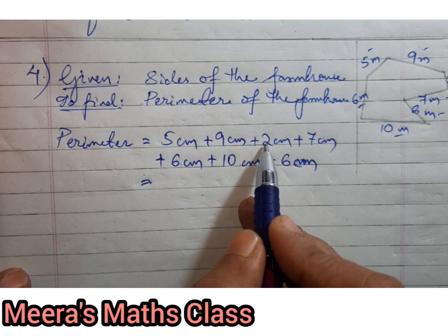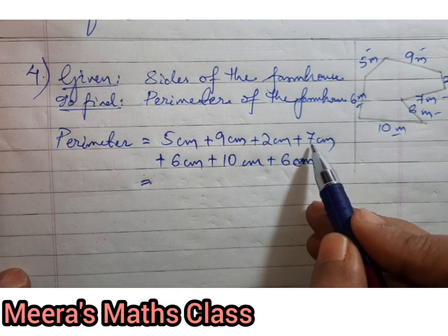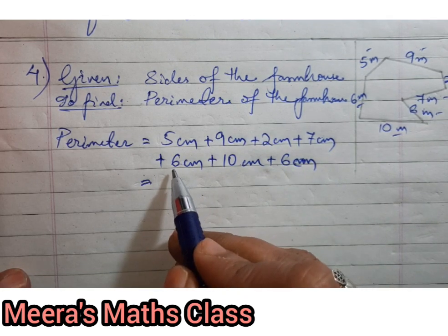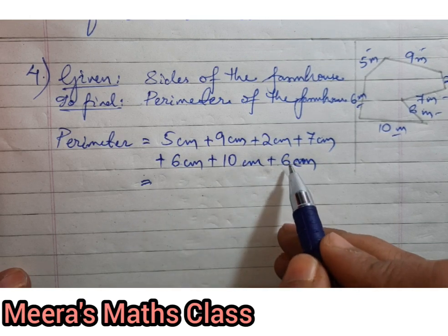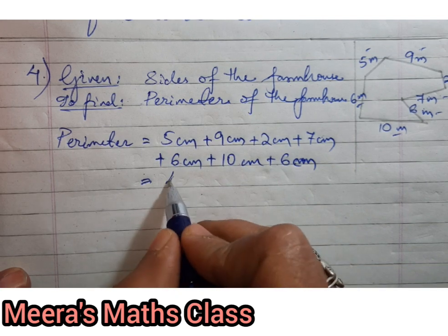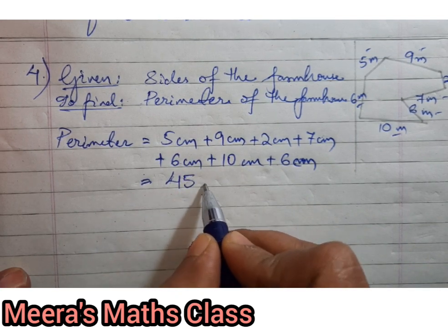Once it is done, now calculate: 5 + 9 = 14, 14 + 2 = 16, 16 + 7 = 23, 23 + 6 = 29, + 10 = 39, 39 + 6 = 45 centimeter.